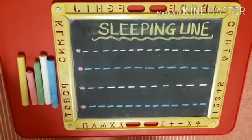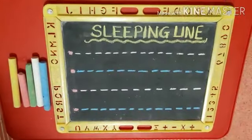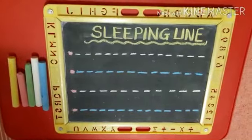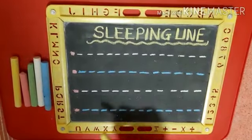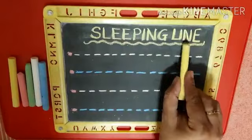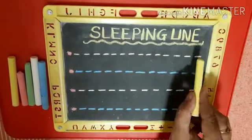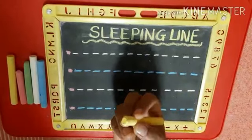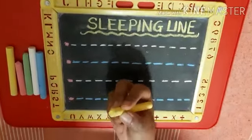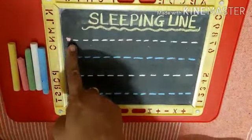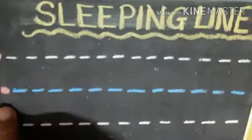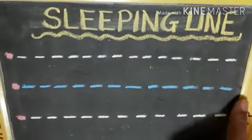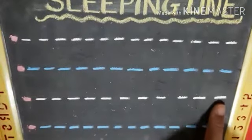Hello children, welcome back. Now we are going to make sleeping line with chalk on the slate. For this, ma'am will draw the dotted lines on the slate from left to right.